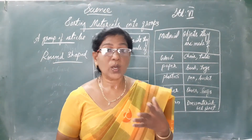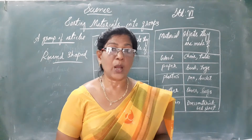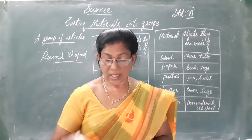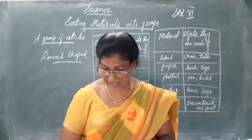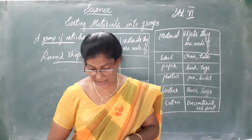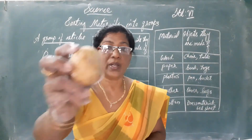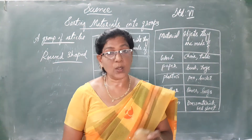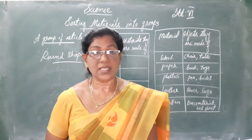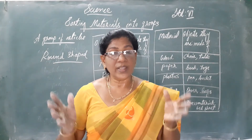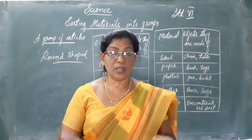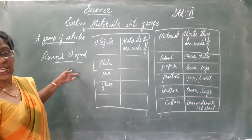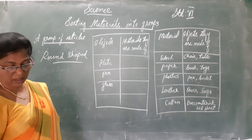If we think about more items, that means nearly round materials, you will be able to include apples, oranges, onions, and many many other items. Even potatoes are also nearly round shaped — these are not spherical shaped, these are nearly round shaped. So we can categorize materials on the basis of whether they are round shaped or spherical shaped.